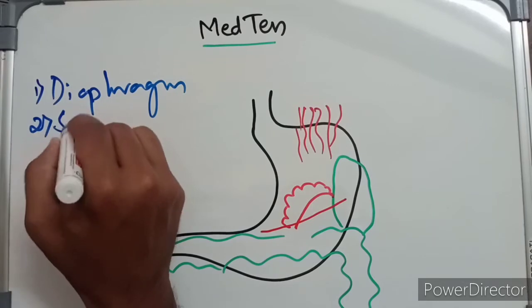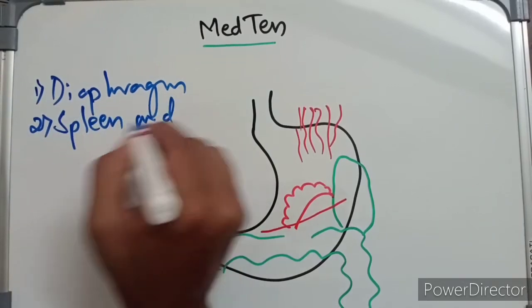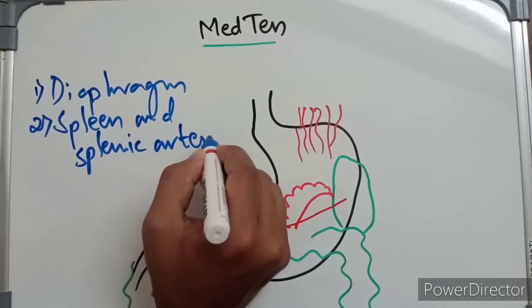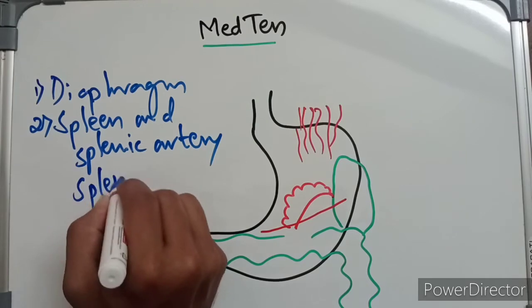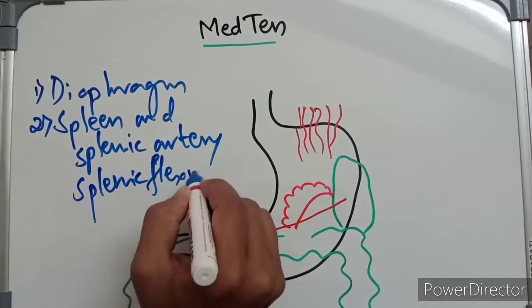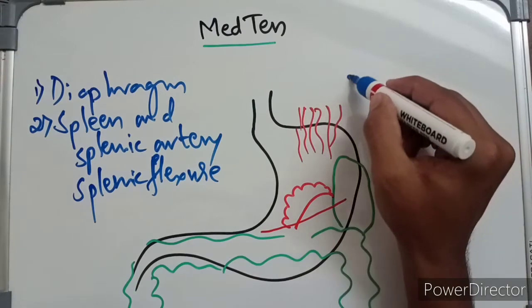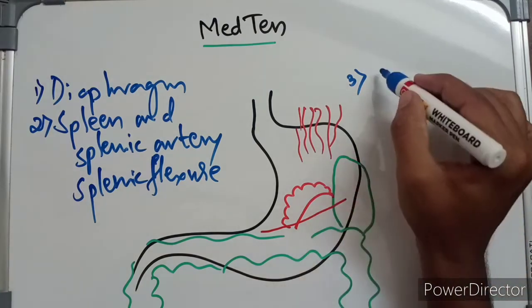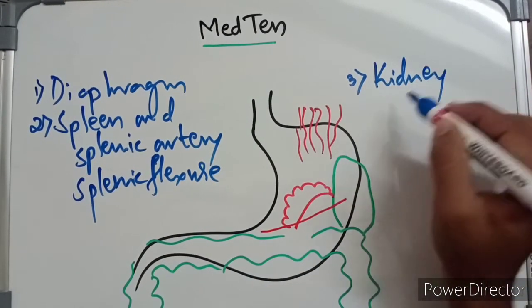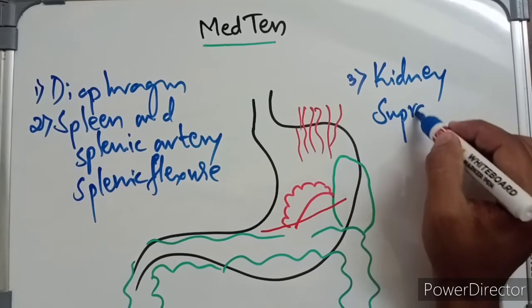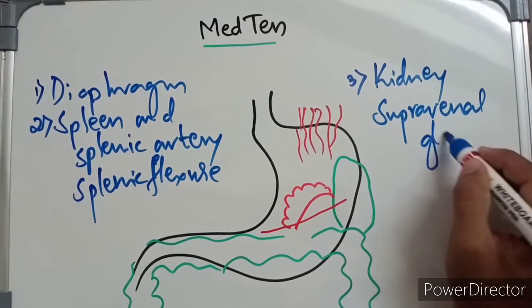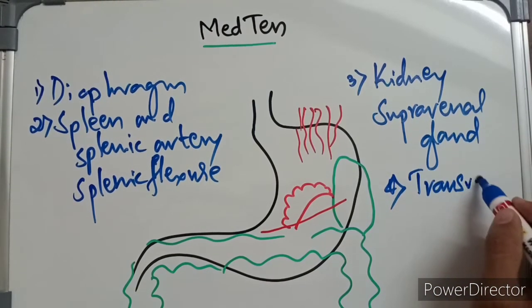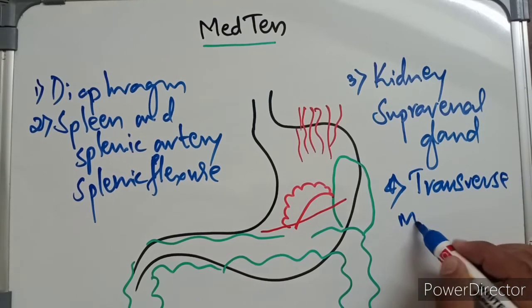The second thing is the spleen and splenic artery and also splenic flexure. The third one is the kidney and suprarenal gland. And the fourth one is the transverse mesocolon.